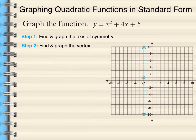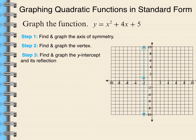Next thing I want to find and graph the y-intercept and its reflection. Now the y-intercept, when the equation is given in standard form, will always be the c-value because x equals 0. So y would equal 0 plus 0 plus 5. The y-intercept is going to be 5, so I go ahead and I plot that. And then I plot the reflection of that point on the other side of the axis of symmetry.